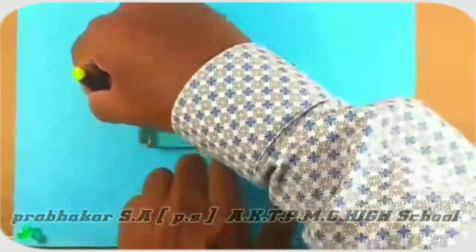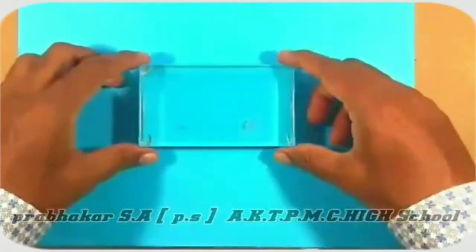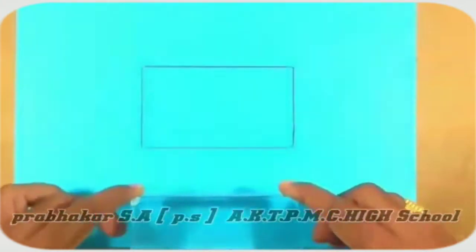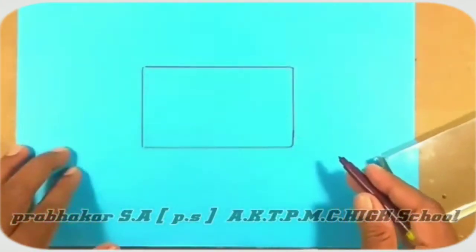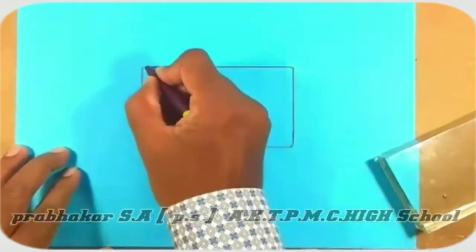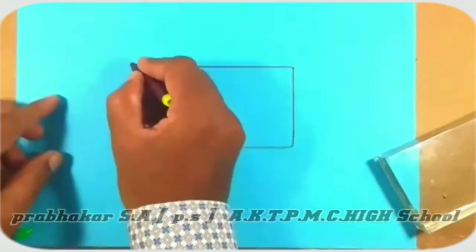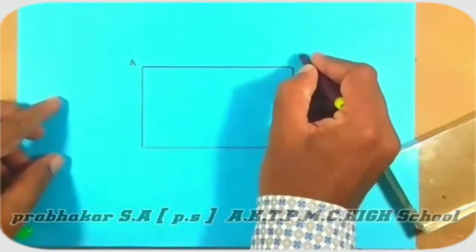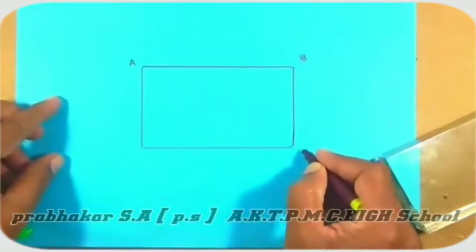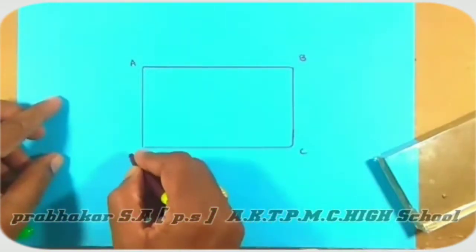Now, remove the glass slab. We observe a rectangular shape which is the shape of the glass slab, and name the vertices as A, B, C and D.